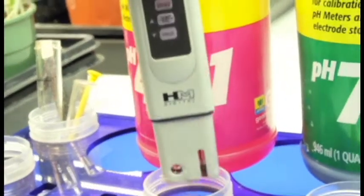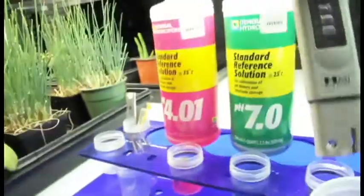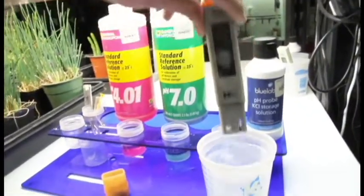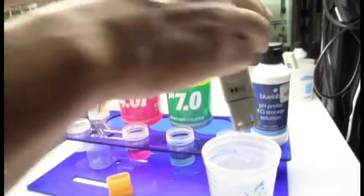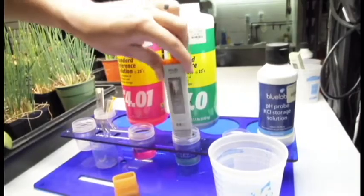I'm going to remove it from the solution, being careful not to let anything drop into my 7.0 that's sitting next to it. I'm going to bring it over to my fresh water and rinse off that 4.0. I'm going to give it another good shake to get those water droplets off. Now I'm going to stick it in my 7.0.